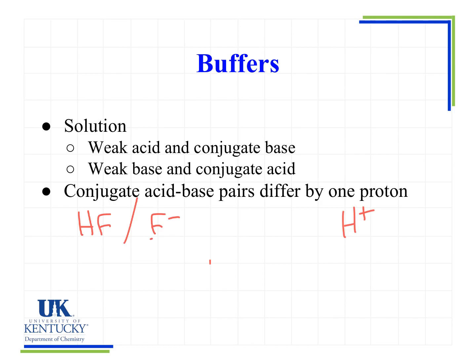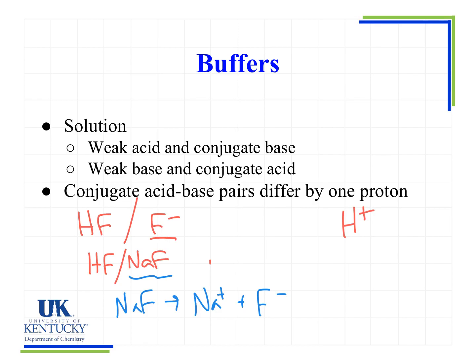One thing to notice is you may not always see this written as F minus, because ions don't exist independently — they have to have a cation with them. So this might also be shown as HF and NaF. NaF is an ionic compound, and so in water it's a strong electrolyte and will actually dissociate into ions. We aren't concerned that the sodium ion is also present; we just need the F minus present because it needs to be the conjugate base of the HF. So we look for the weak acid, look for its conjugate, and notice that it may be hidden inside an ionic compound.